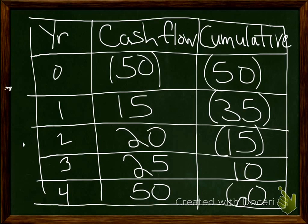Looking at this, we can see that we had an initial investment of $50 million. That's year zero — it's a negative number, that's the money we spent for the investment. Our cumulative, therefore, is also negative 50. All the cash flows were given to us, so every year that's how much money we make off the project. Our cumulative is our net cash flow taking into account the investment.